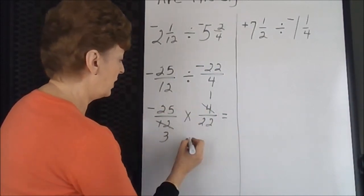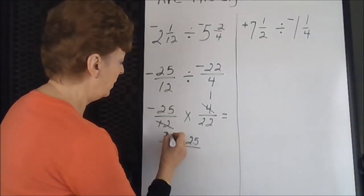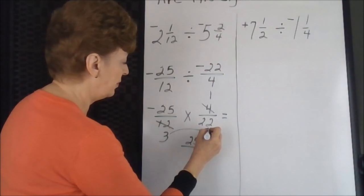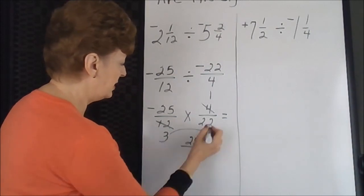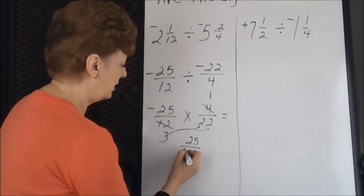25 times 1 is 25. 3 times 22, well, if you can eyeball it, we're going to go to our 1s column, 3 times 2 is 6. And then to our 10s column, another 6.